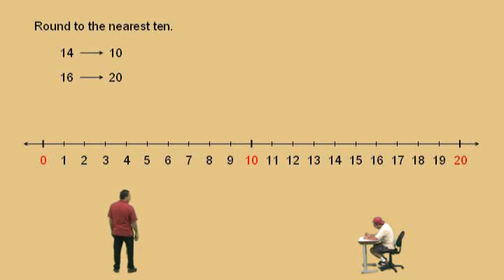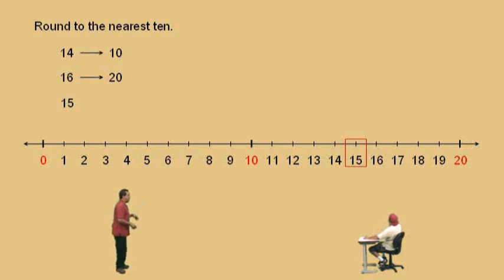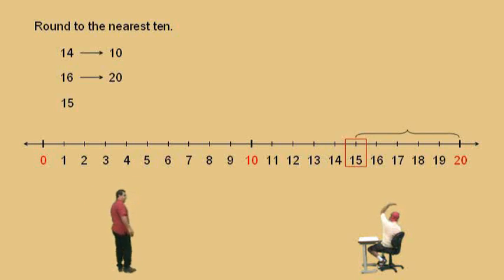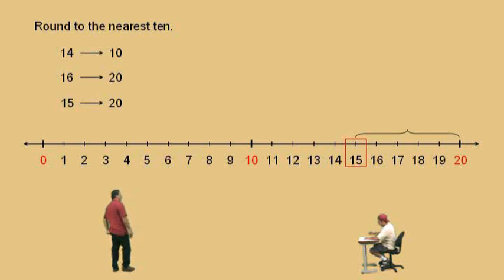Okay, let's do another one. How about 15? Now that one's in the middle. Which way do you round? Notice the 15 is 5 units away from the 10, and it's also 5 units to the 20. But which way do you round, Charlie? To the right — that's right. So when it's in the middle, you go to the right, you round up, and we end up with 20. Very nice.